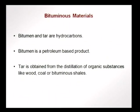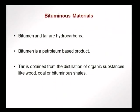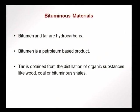Bitumen and tar are hydrocarbons. Bitumen is a petroleum-based product — it comes from the petroleum industry. Tar is obtained from the distillation of organic substances like wood, coal, and bituminous shales. In some cases, tar can also be found in a natural state.